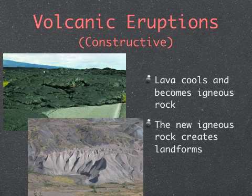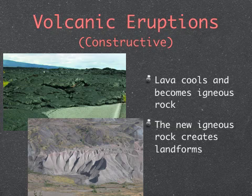Volcanic eruptions are actually another example of constructive forces. Any time lava cools, it becomes igneous rock, and this igneous rock then creates landforms. If you look in the top picture, you can see how the lava spread out over the road, pretty much creating a whole new landform. And if you look in the bottom picture, that mountain range was actually once lava that cooled and became igneous rock.